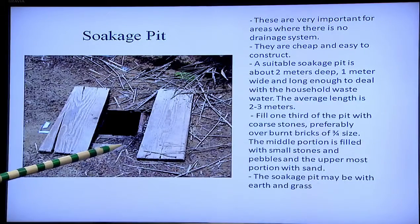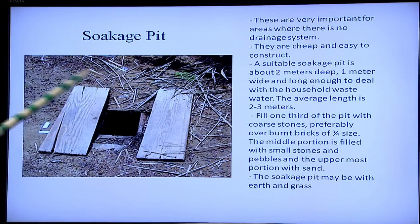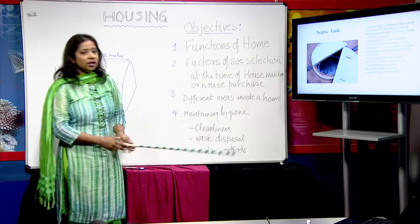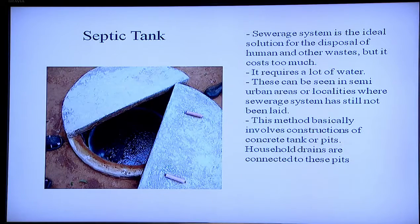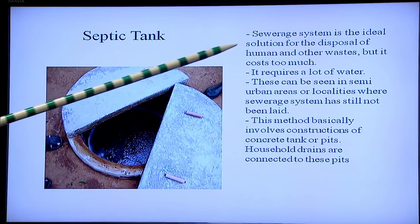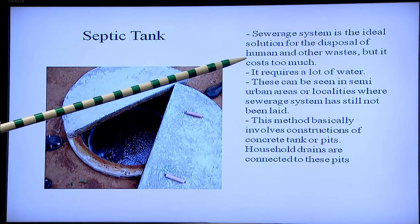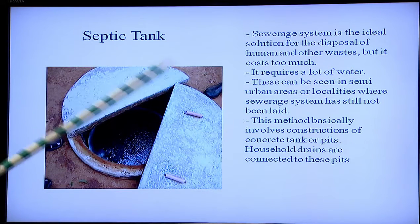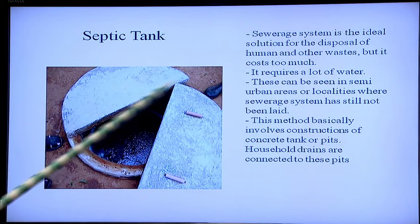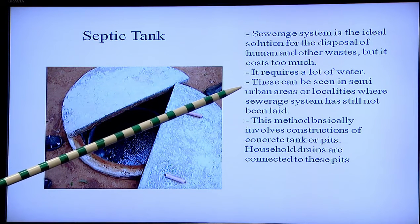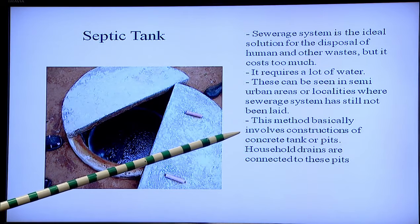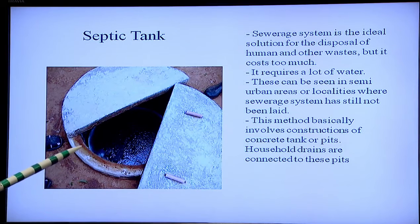Soakage pits are easy to construct and a cheaper replacement for proper toilets. Next is the septic tank. Sewage systems are the ideal method for disposal of human and other waste but are very costly and may not always be available. Septic tanks are constructed as an alternative — however, they require a lot of water. Septic tanks are commonly found in semi-urban areas where sewerage systems have not yet been laid. This method involves construction of concrete tanks connected to household drains for collection of waste water and human waste.